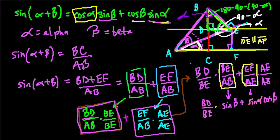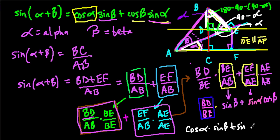Going back to BD over BE: BD is the adjacent side and BE is the hypotenuse for angle alpha in triangle BDE, so BD over BE equals the cosine of alpha. Putting it all together: sine of alpha plus beta equals cosine of alpha times sine of beta plus sine of alpha times cosine of beta. Switching the order using the commutative property gives us our identity.